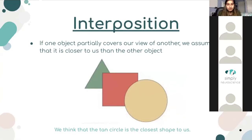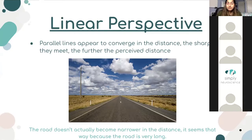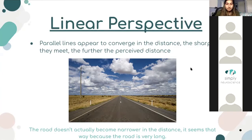Moving on to linear perspective — you've probably experienced this from the passenger seat of your parents' car. Essentially, parallel lines appear to get closer or converge in the distance, and the sharper they meet, the further the perceived distance. As you can see with the road, it's not actually becoming narrower. As it's farther away, the parallel lines are perceived to get closer together and eventually touch, when in reality the road is just really long. Our brain perceives the image as converging because it is so far away.